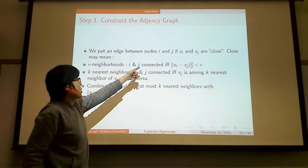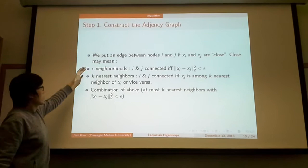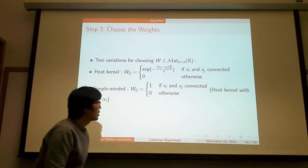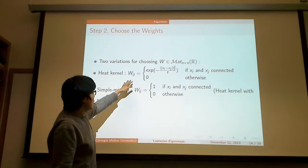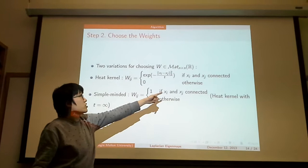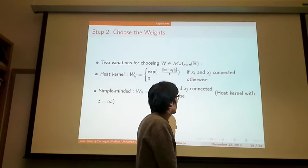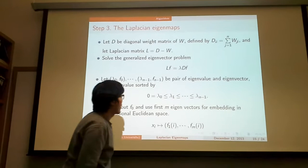First, we put an edge between i and j if xi and xj are close. There are several different criteria for closeness. You can choose any of them. Step two is to choose the weight matrix. You can choose either of them. Note that wij is zero if xi and xj are not connected, which means that if xi and xj are far enough, then wij is zero.